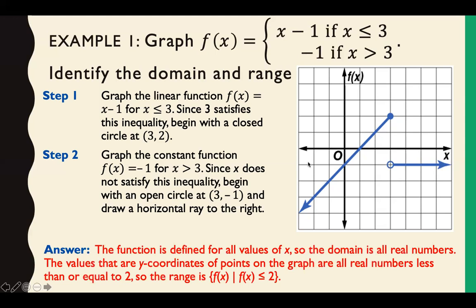For our domain, it actually is all real numbers because we exist from end to end for our x values. Our y values are all the y values less than or equal to 2. So we might see this a few ways. Here we have it in inequality form. It says f of x such that f of x is less than or equal to 2. But we will also be looking at interval notation.